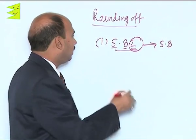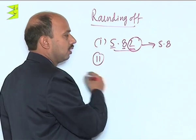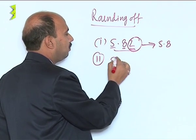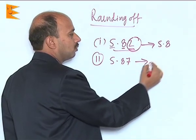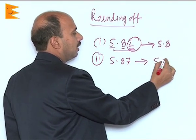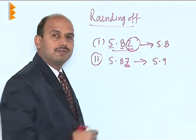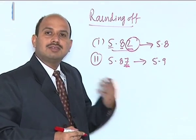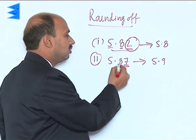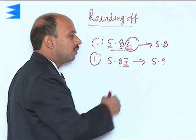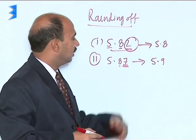Taking another example, 5.87 is rounded off to 5.9, because 7 is more than 5, so we raise the preceding digit by 1, and it becomes 5.9.